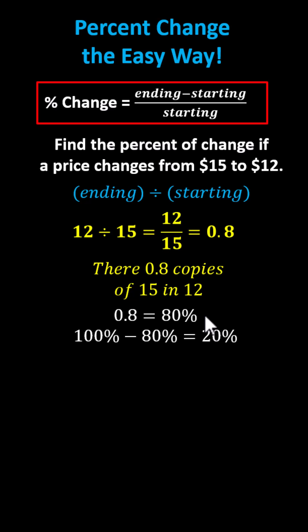Since 0.8 equals 80%, if 80% of the price remains, the price must have dropped by 20% or decreased by 20%, because 100% minus 80% is 20%.